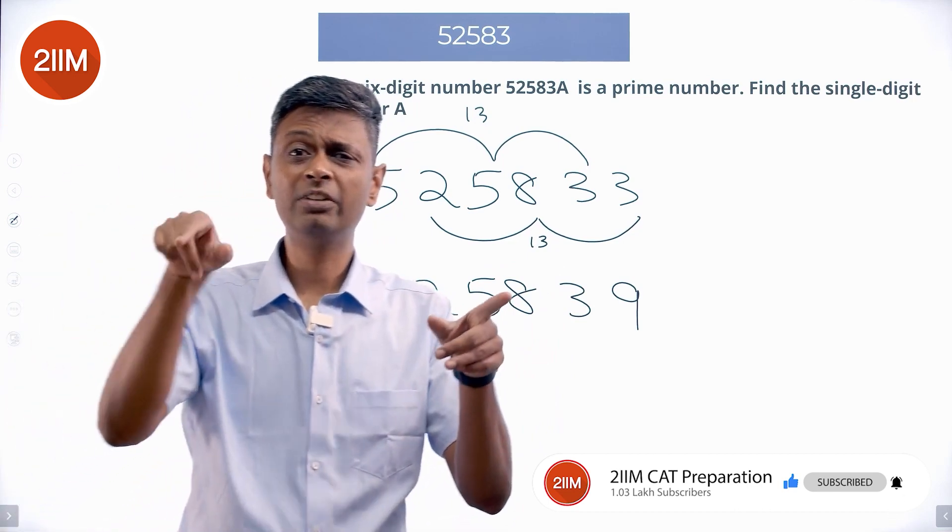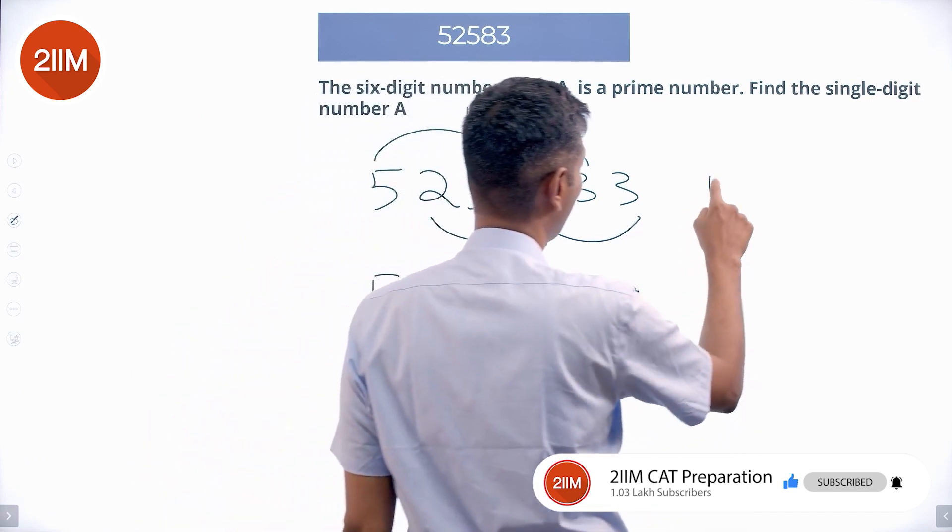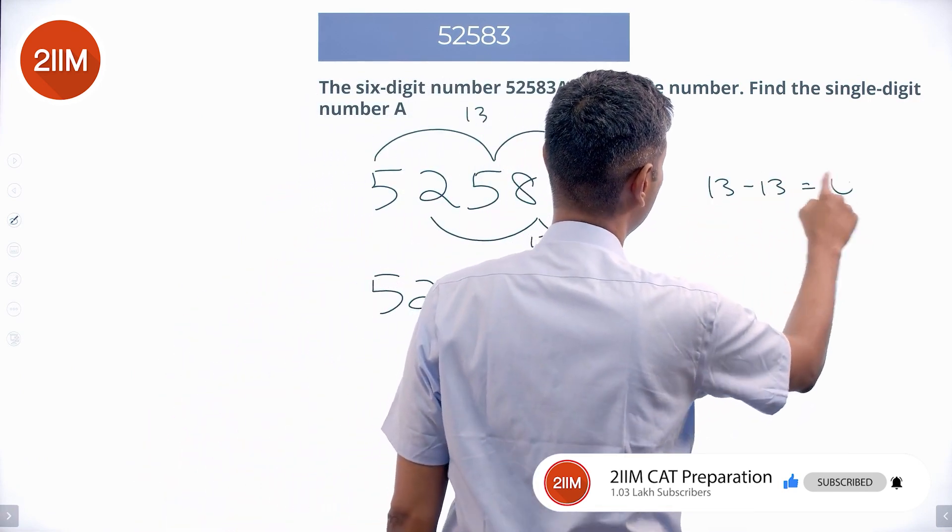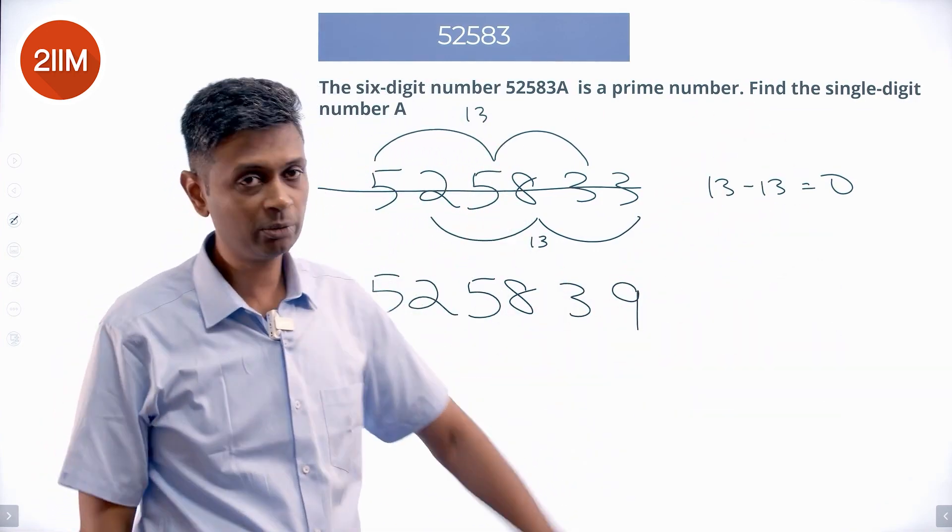13-13=0. I am loving this! This number is a multiple of 11. I know this number is a multiple of 11 because the test of divisibility works.